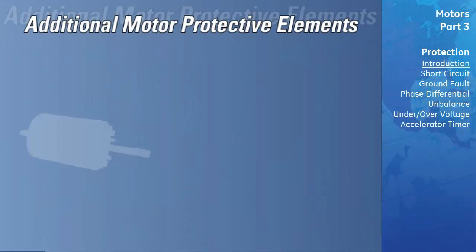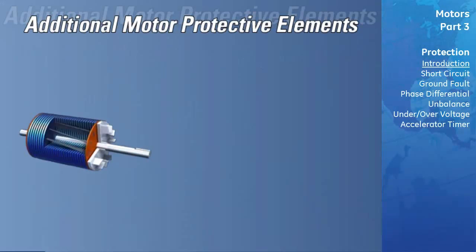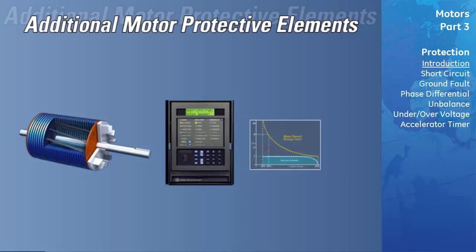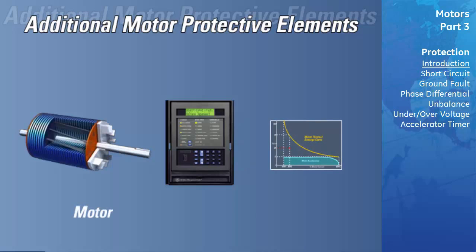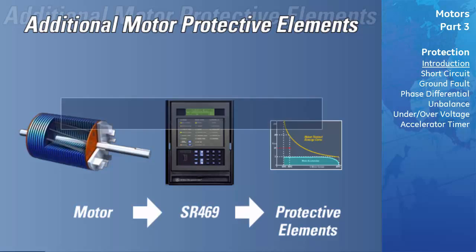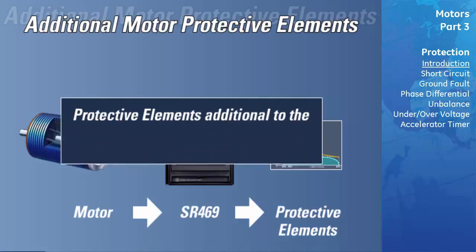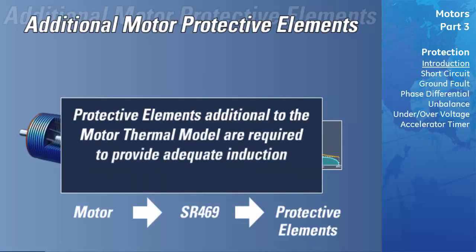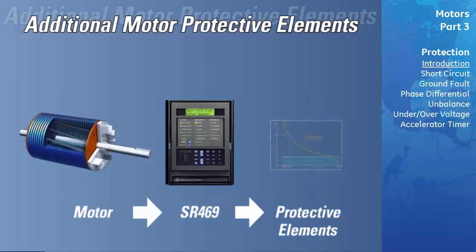Additional Induction Motor Protective Elements. Having a clear understanding of the motor thermal model and how to properly set its components provides a good start to protecting an induction motor. However, there are a few additional protective elements which we will examine. Some of these elements, such as instantaneous overcurrent element, are required to provide adequate protection for an induction motor, while others, such as jam detection, are popular options which may enhance the overall protection scheme.